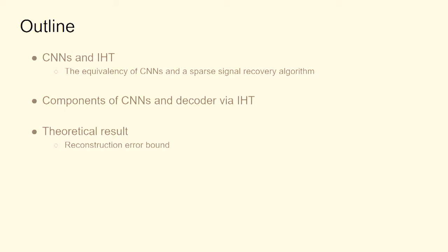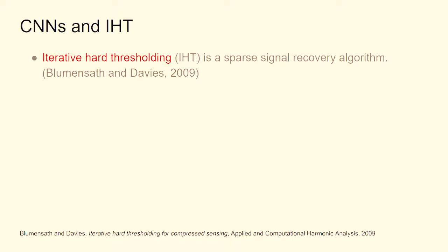Iterative hard thresholding multiplies your measurements by the transpose of your short fat random matrix to get a great big long proxy vector, and then retains the top k values in that coefficient vector, setting everything else to zero. It subtracts that off from the current approximation and iterates. So: multiply by the transpose of a matrix and set to zero a bunch of coefficients. Does that sound familiar? That's exactly what convolution plus pooling does.